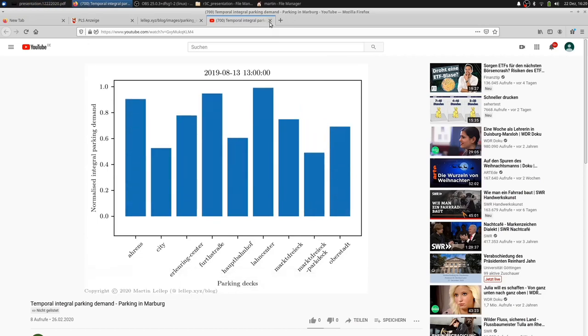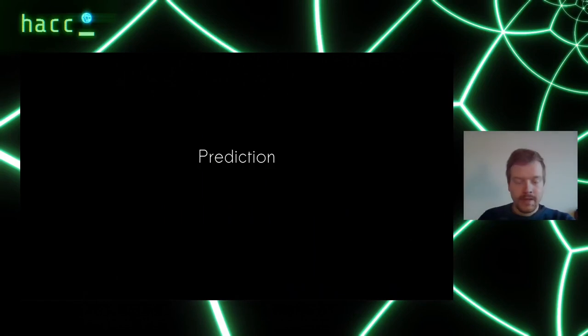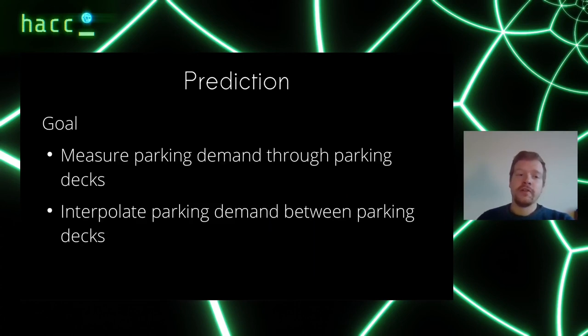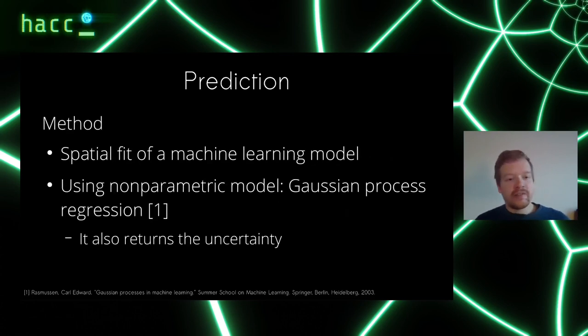I come lastly to the prediction part. The goal here is to measure the parking demand through the parking decks but then interpolate between the parking decks. I would like to know what's the parking demand in between, for instance between the Oberstadt and the Erlenring. For doing so, I use a spatial fit and a machine learning model. In this particular case, it's a non-parametric model called Gaussian process regression.